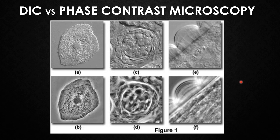This picture shows the image obtained from the DIC and the phase contrast microscope. The images A, C, and E are obtained from DIC Microscopy, and the images B, D, and F are obtained from phase contrast microscopy.